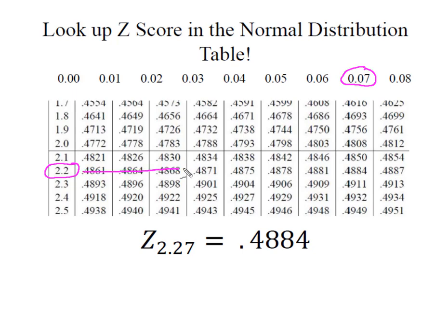I'm going to look at the intersection of those two, and I find that 0.4884, or 48.84% of the data, is associated with a z-score of 2.27.